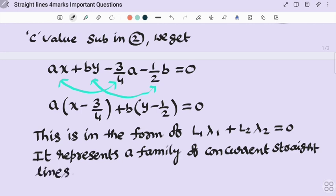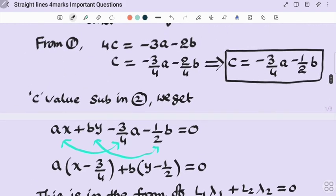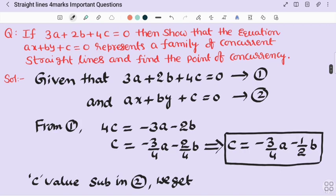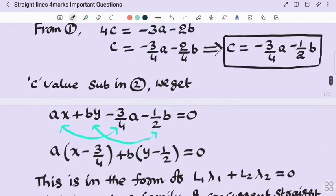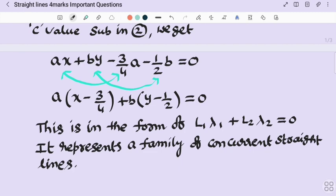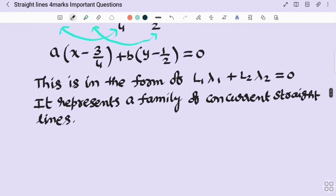So half of the answer over. First, what we are doing here, from the given condition, c making subject and substituting in the equation 2. After that, whatever we got the result, making into the form of L₁λ₁ + L₂λ₂ = 0. It shows that family of concurrent lines.